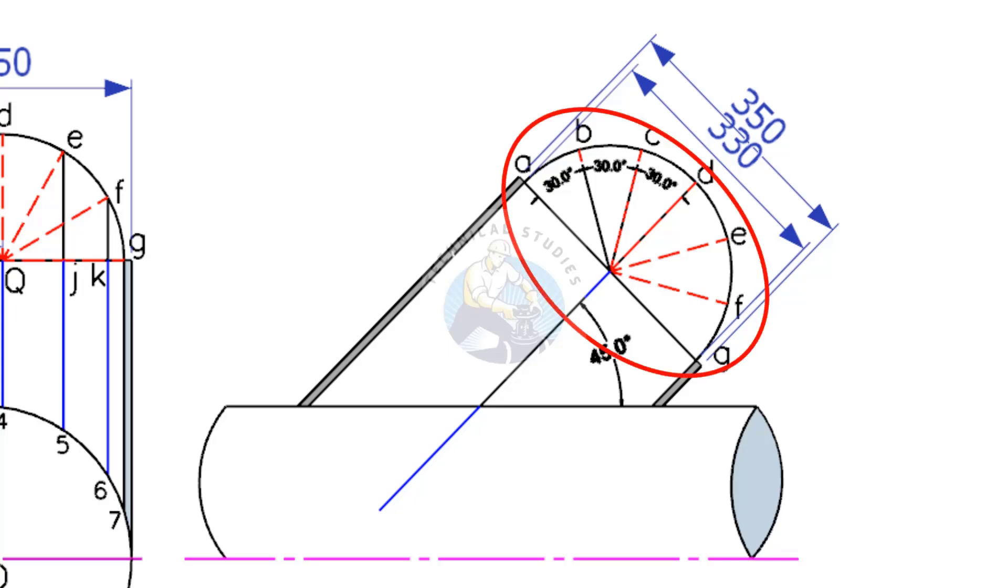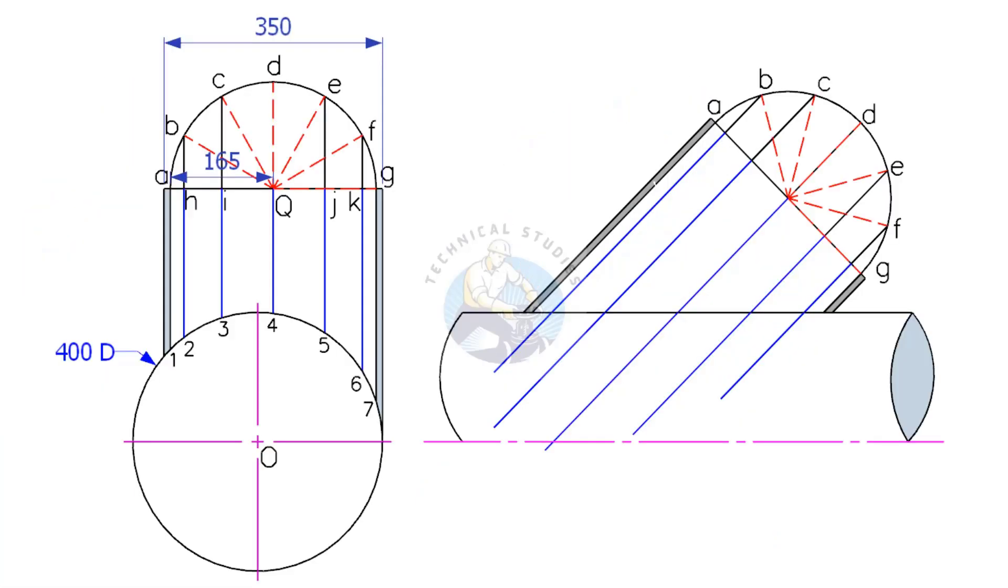Divide the top half circle as done previously. Draw lines parallel to the edge of the branch as shown.